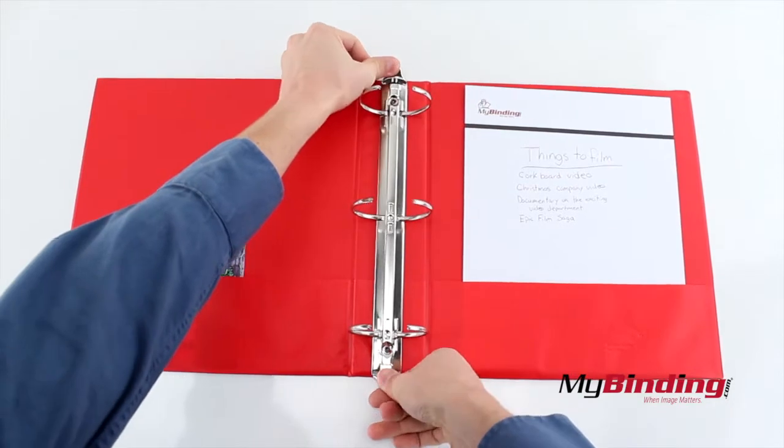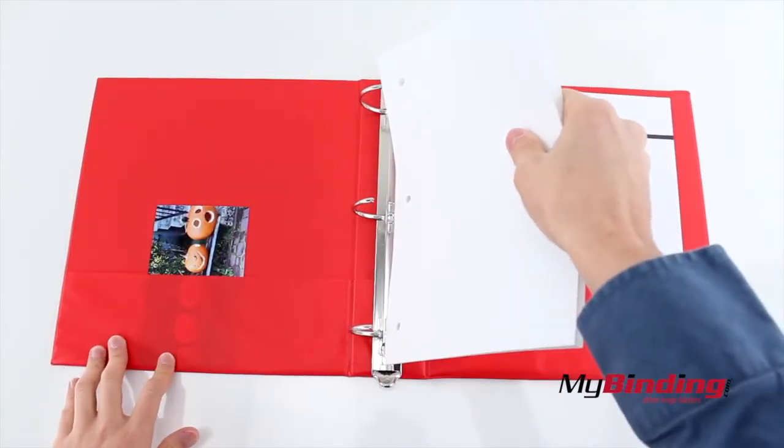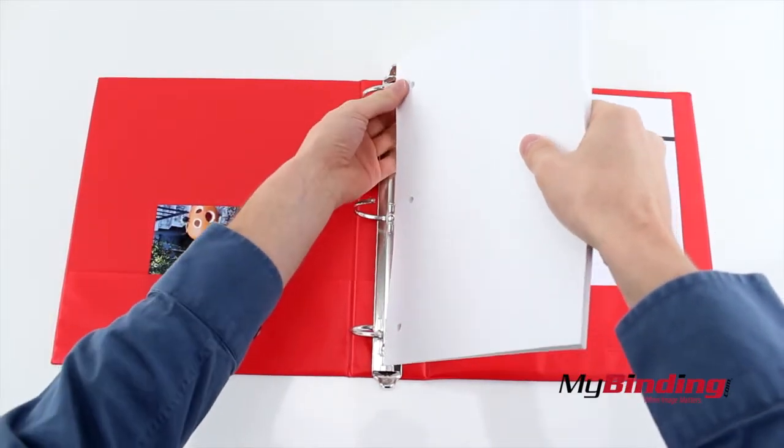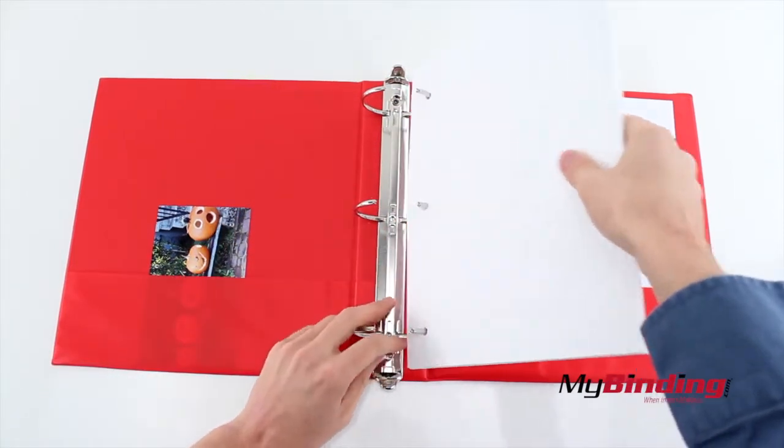Use the side tabs to open the binding rings and insert your three hole punched pages. The amount of pages you can hold depends on the size of binder you purchase.